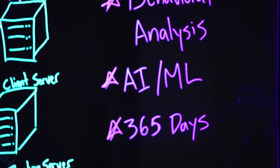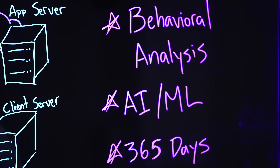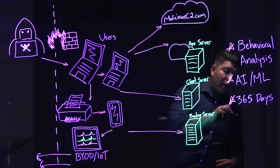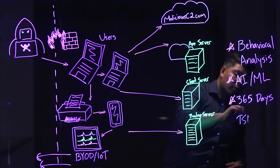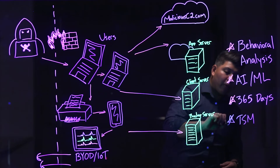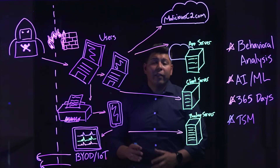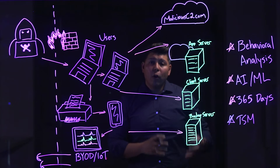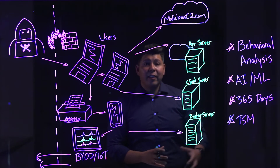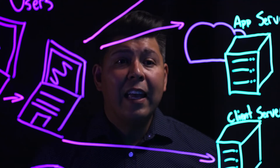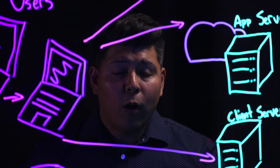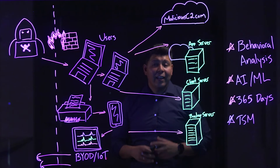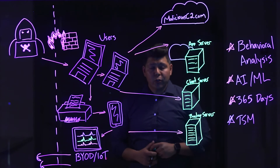Gigamon Threat Insight is the world's first guided SaaS network detection and response tool. You have a technical success manager that is there for you, helping you with enablement, making sure that your team can use the tool effectively. If you have an incident and you require incident response, they are there to help assist with that response — it is included in the service.